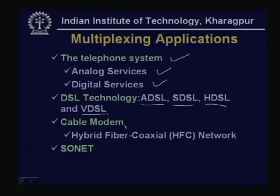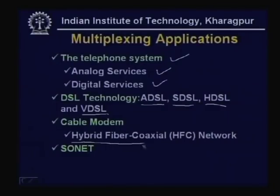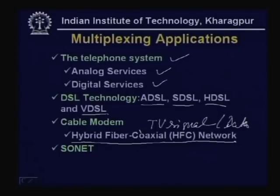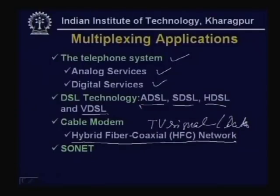We shall also discuss cable modem, where the standard cable TV network can be used for data transmission using a Hybrid Fiber Coaxial (HFC) network. We shall see how multiplexing is used not only to send TV signals but also for internet access. For optical networks, we shall consider SONET (Synchronous Optical Network), which provides very high bandwidth, and how the telephone system and SONET can be integrated. These are the four important multiplexing applications we shall discuss.